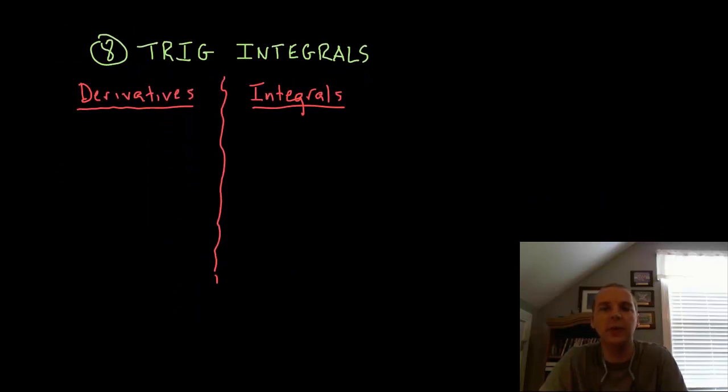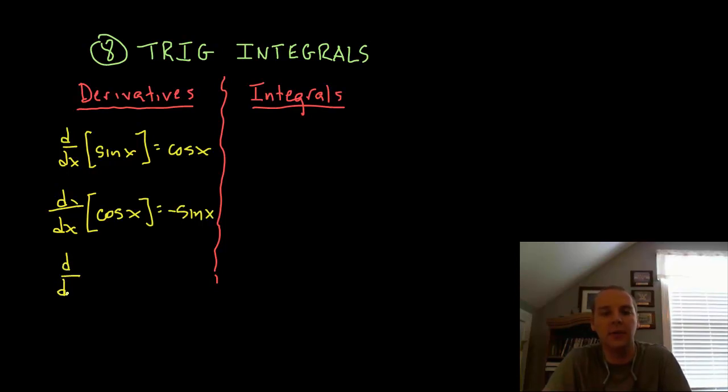The trig integrals. We know all the trig derivatives, the derivative of sine and cosine. I'll just do the first three: sine, cosine, and tangent. Derivative of sine is cosine x, the derivative of cosine x would be negative sine x, and the derivative of tangent would be secant squared x. So we know those three, plus there's three others. For time's sake I'm not going to write all six.